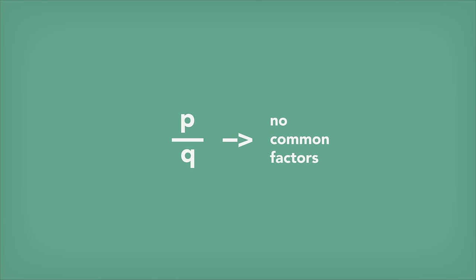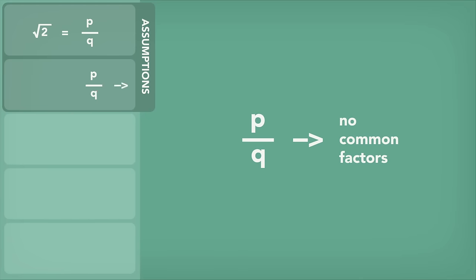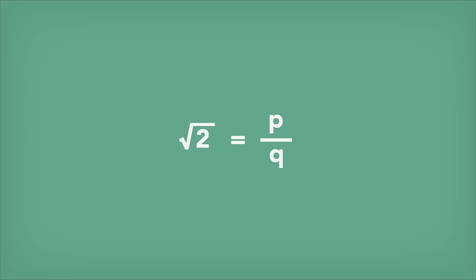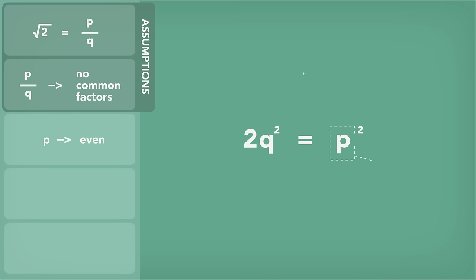To prove that root 2 was not rational, Hippasus just had to prove that p over q cannot exist. So he multiplied both sides of the equation by q and squared both sides, which gave him this equation. Multiplying any number by 2 results in an even number, so p squared had to be even. That couldn't be true if p was odd, because an odd number times itself is always odd, so p was even as well.